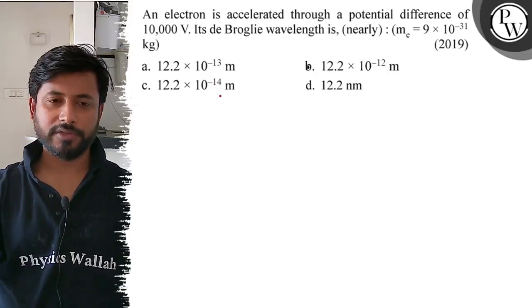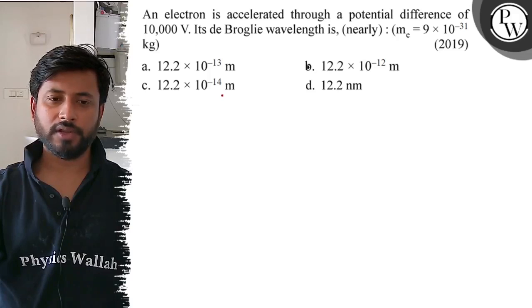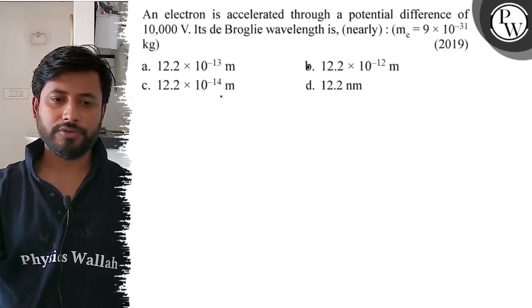An electron is accelerated through a potential difference of 10,000 volts. Its de Broglie wavelength is: option A, 12.2 into 10 to the power minus 30 meter; option B, 12.2 into 10 to the power minus 12 meter; option C, 12.2 into 10 to the power minus 14 meter; option D, 12.2 nanometer.